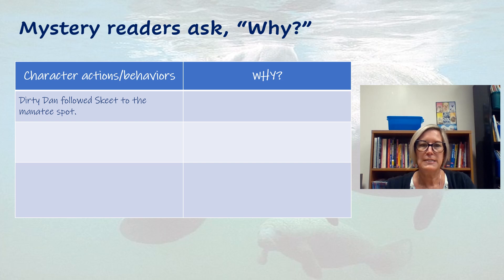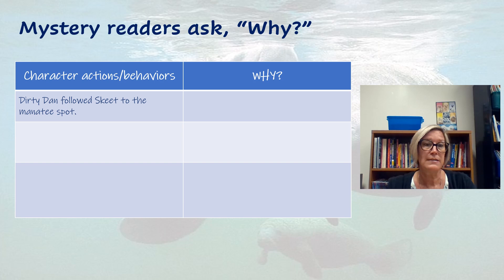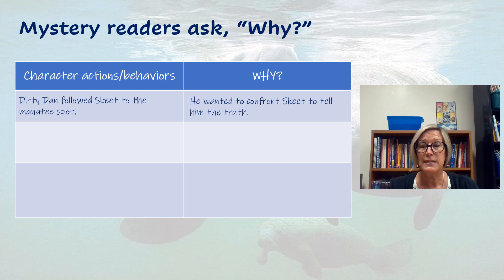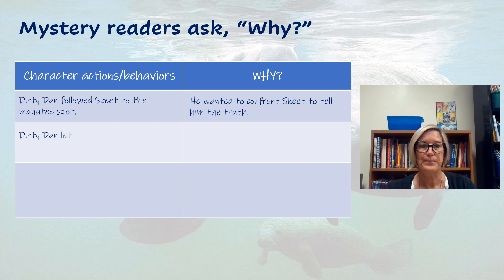I'm going to be putting some events, some character actions in the left-hand side of this chart, and then I will ask why and reveal what I think is motivating the character to do this thing. The first thing is that Dirty Dan followed Skeet to the manatee spot. Why did he do that? I'm thinking he wanted to confront Skeet to tell him the truth — he followed Skeet because he wants an opportunity to explain himself. That's what motivated him to follow Skeet.